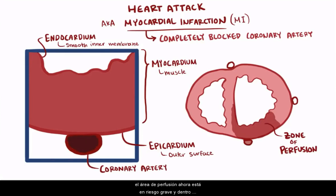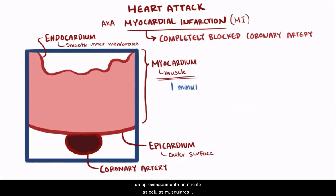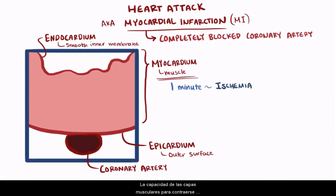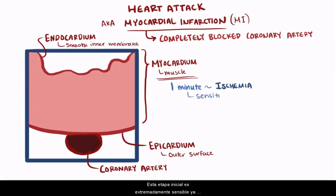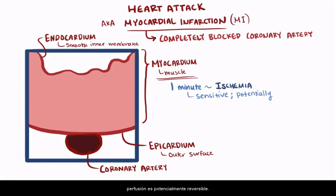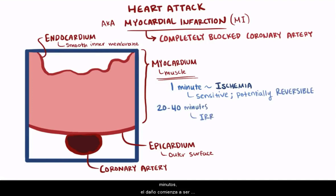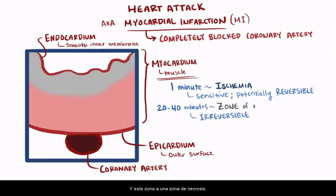Let's say the LAD gets blocked. The area of perfusion is now at serious risk, and within about a minute, the muscle cells in this zone don't see enough oxygen and become ischemic, and the muscle layer's ability to contract is severely reduced. This initial stage is extremely sensitive, since the ischemic damage to cells in the perfusion zone is potentially reversible. After about 20–40 minutes though, damage starts to become irreversible and the cells start to die, and this zone changes to a zone of necrosis, or dead tissue. Once lost, those cells can never return or regrow.